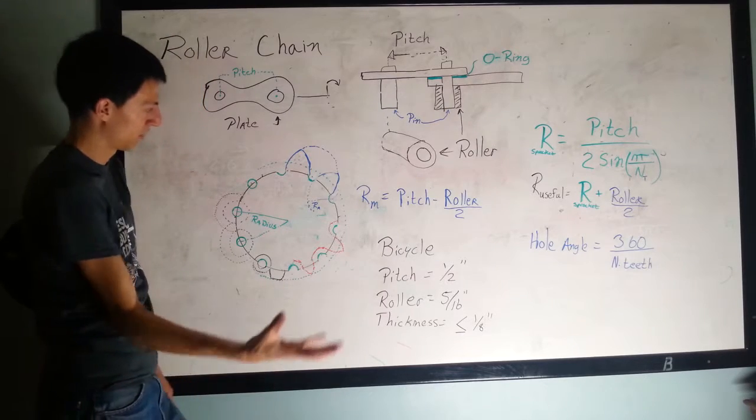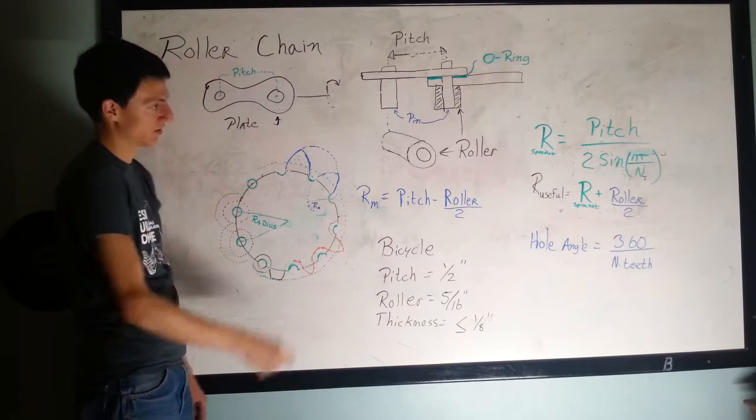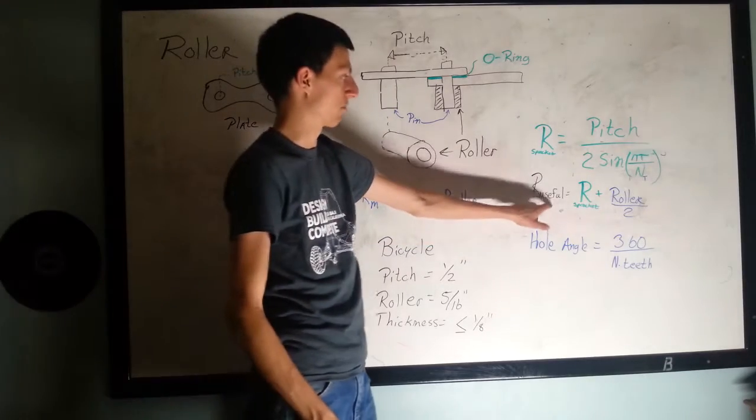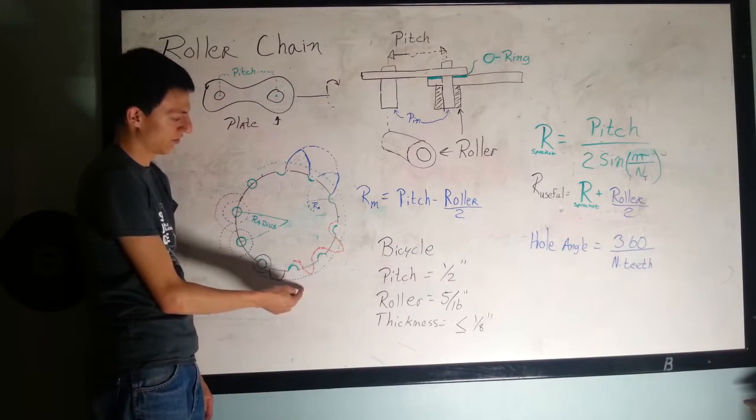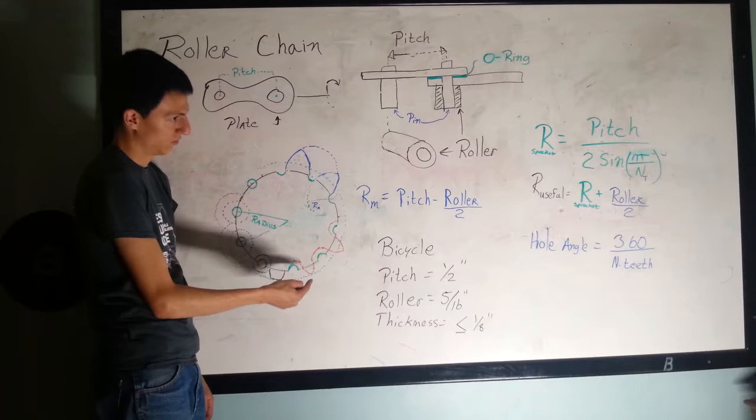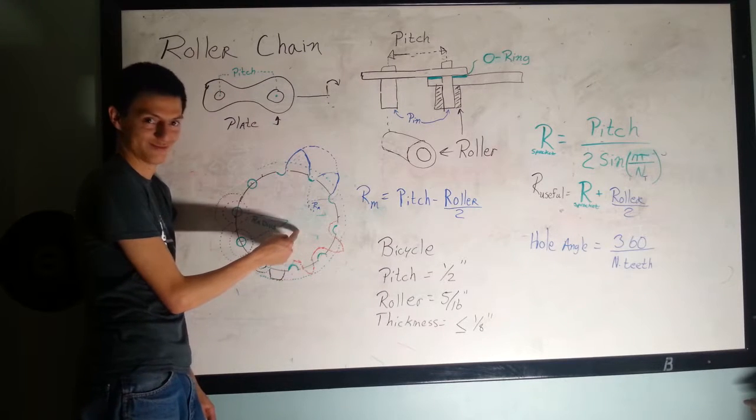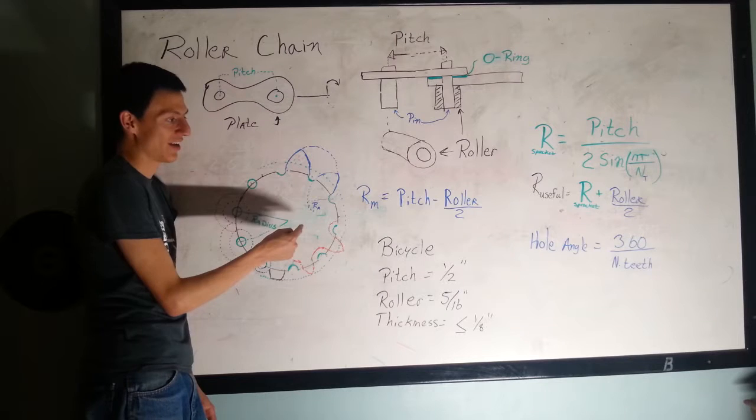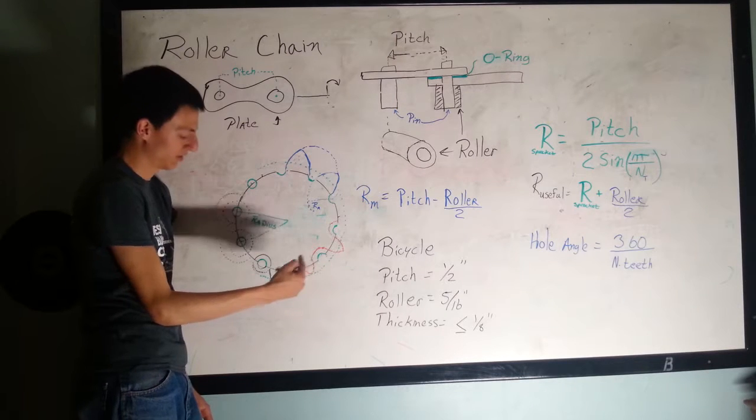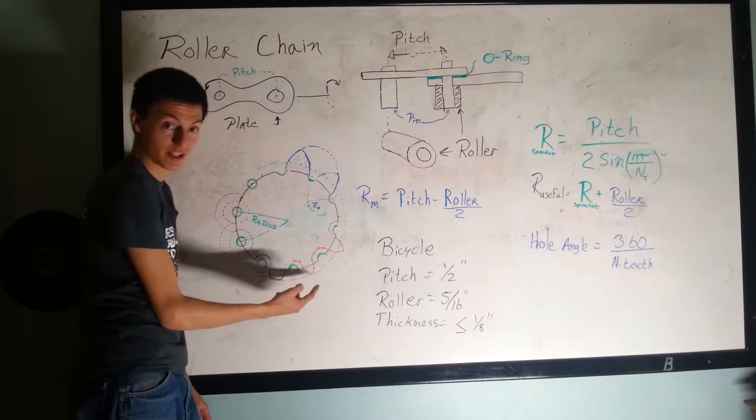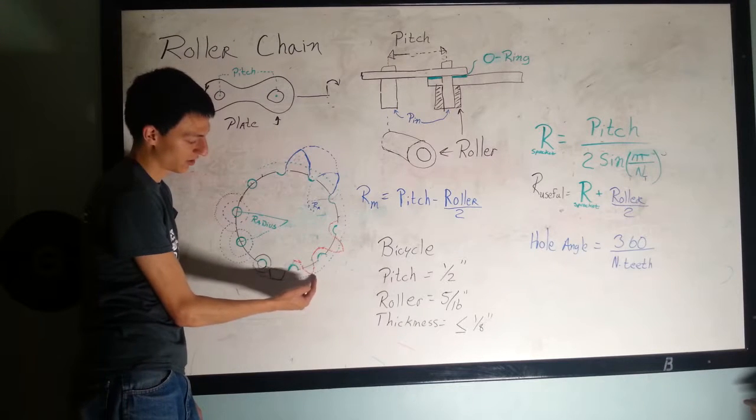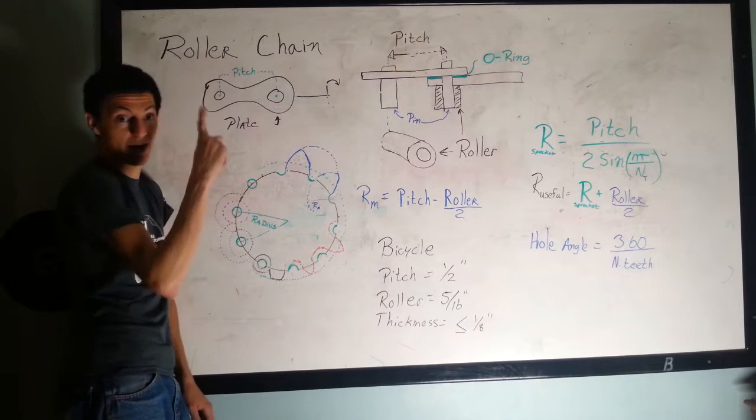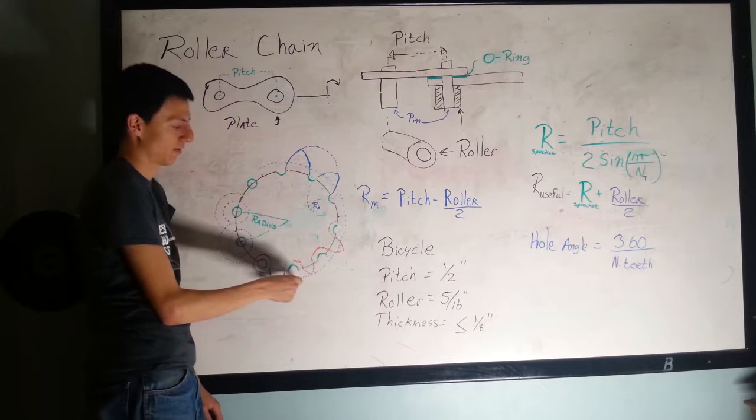If you complete this drawing from whatever kind of chain you're using and then try to draw the useful radius around it, it will appear too big. That means your sprocket will look like motorcycle sprockets where the tips of the teeth don't stick out past the chain.